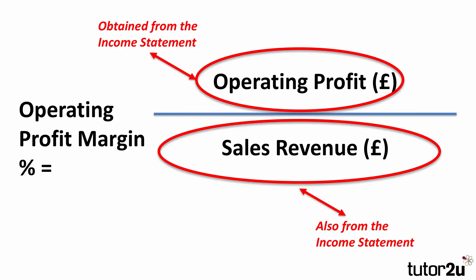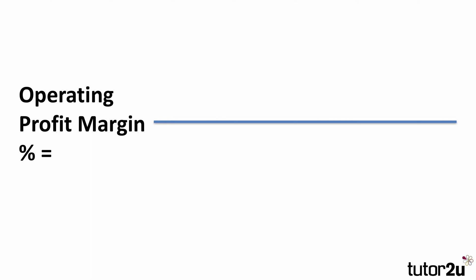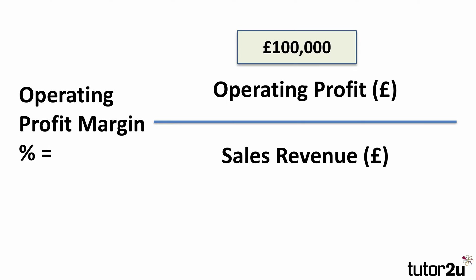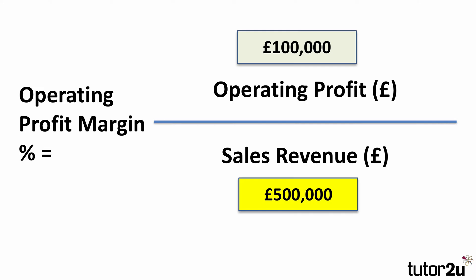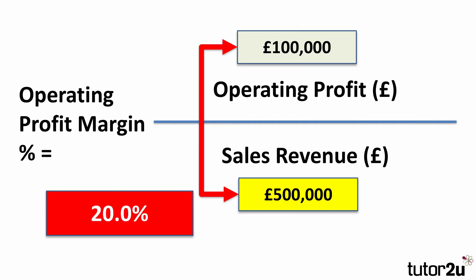If we were looking for this data, we'd look at the income statement for both the operating profit and the sales revenue, because it's the income statement that tells us about sales and the associated costs and profit of the business. Our operating profit was 100,000 pounds divided by the sales revenue of 500,000 pounds. Because we need to express the margin as a percentage, we multiply 100 divided by 500 times 100, which means the operating profit margin is 20%, meaning that for every 100 pounds of sales revenue, the business is earning 20 pounds of operating profit.